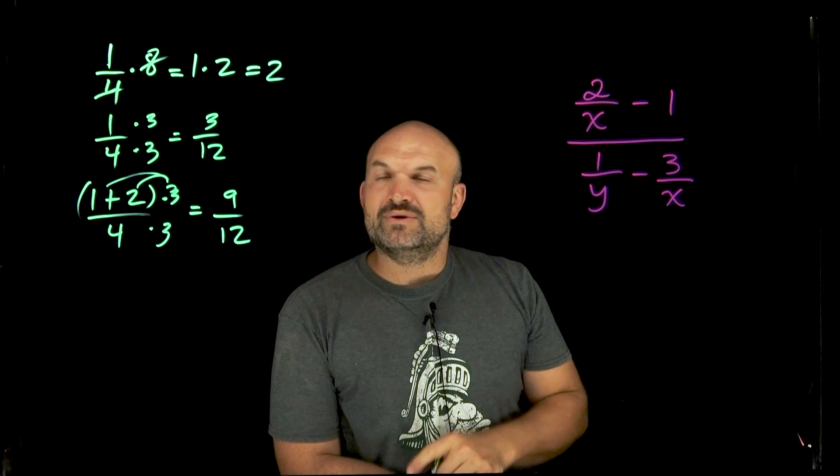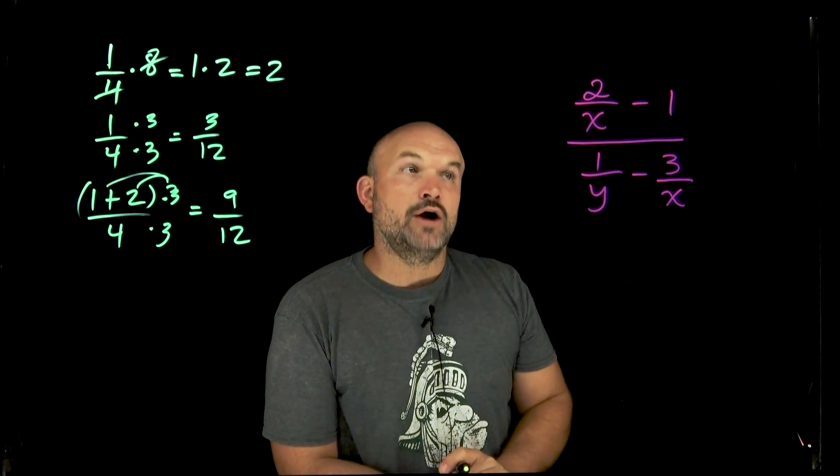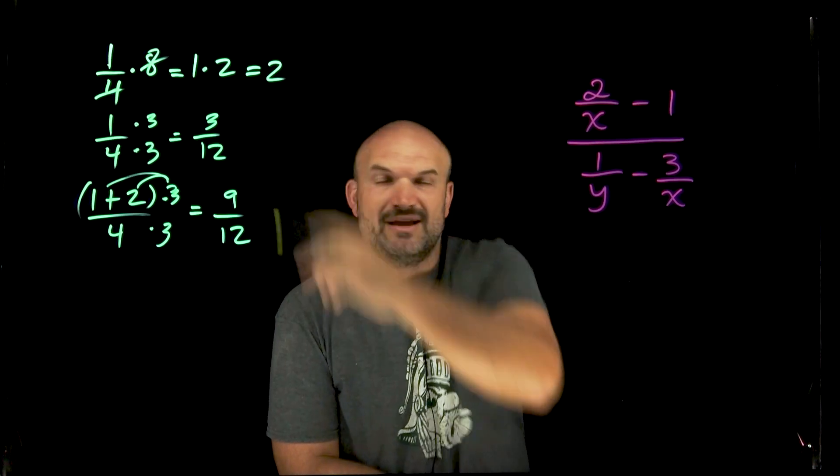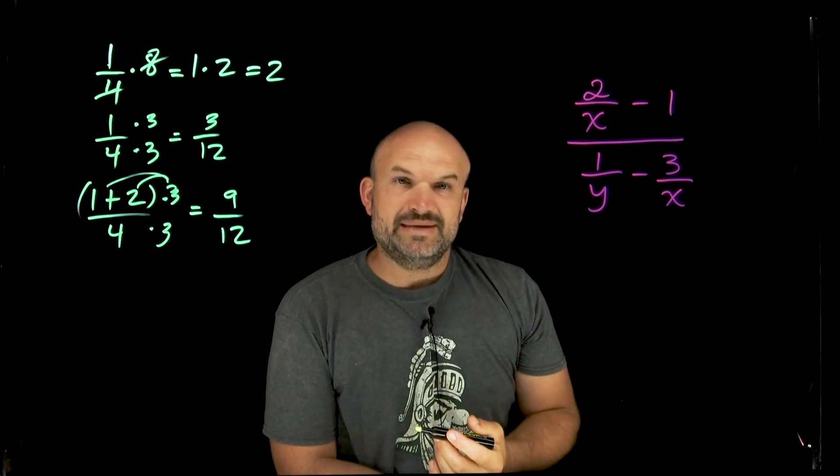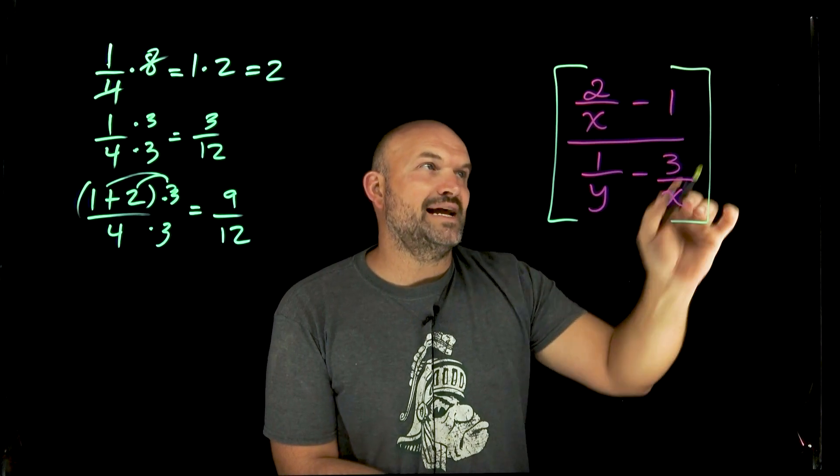So our idea is try to find what is the smallest variable that x and y are both going to divide into, because I have two of them. I just don't have a number, I have two of them. Well, that's just going to be an x and a y. So what I'm going to do is I'm going to multiply everything times an x and a y.